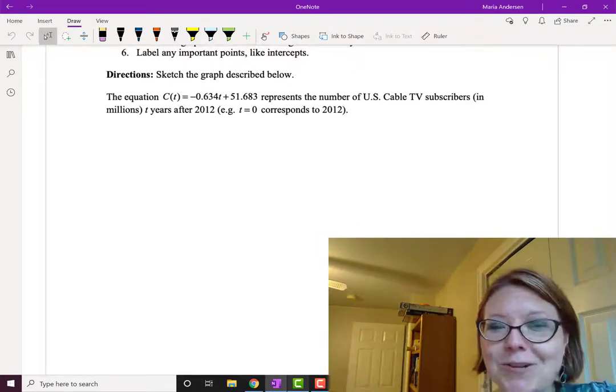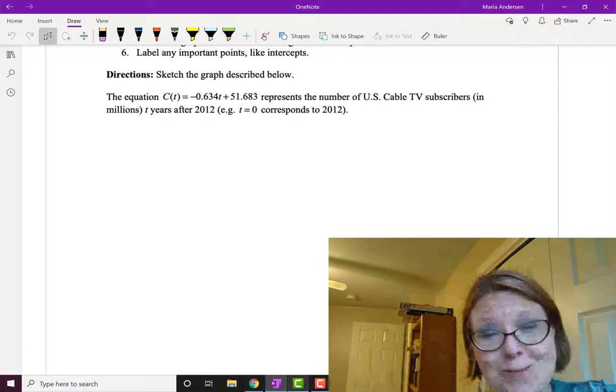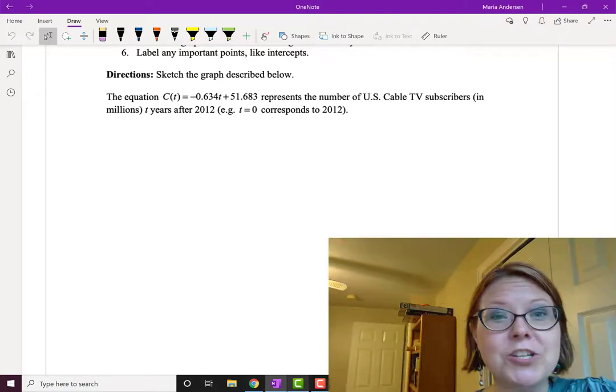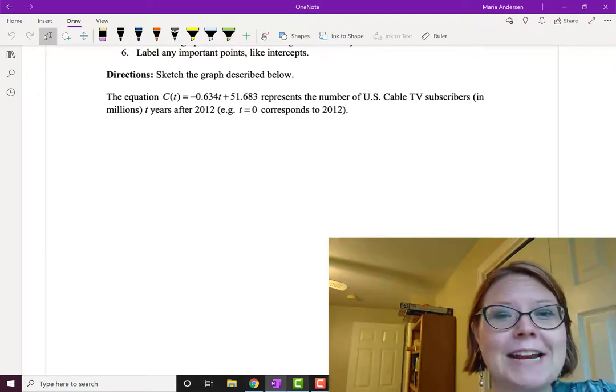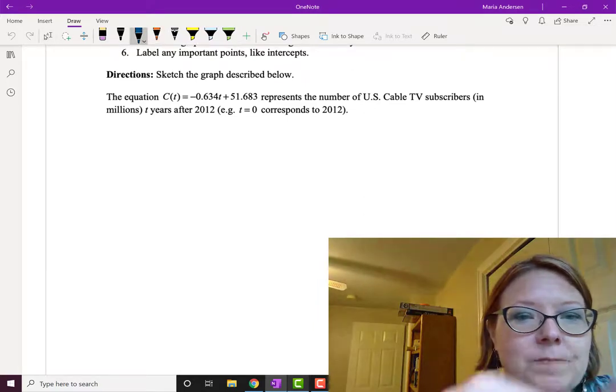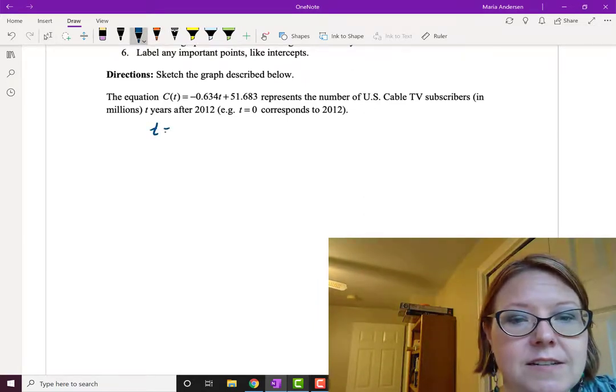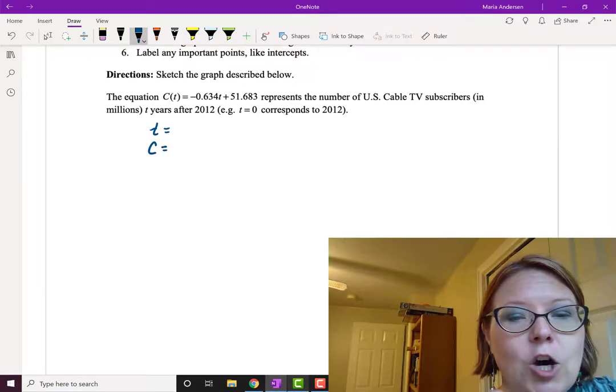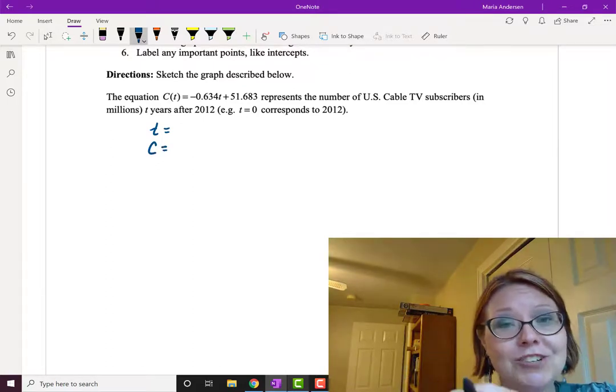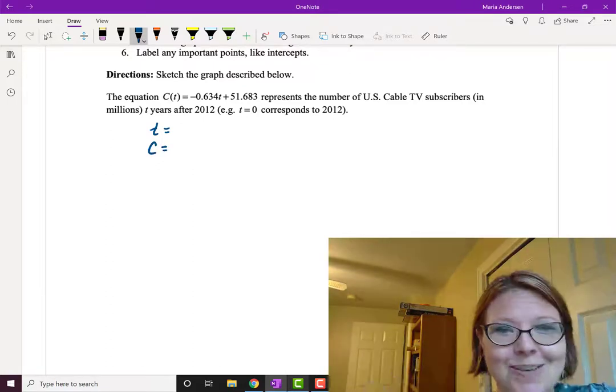The first thing we're going to do is what I always do at the beginning of an application problem, which is to declare the variables, to write out what the variables mean. We need to write out what t is and what C is. This helps make sense of which variable goes on which axis.